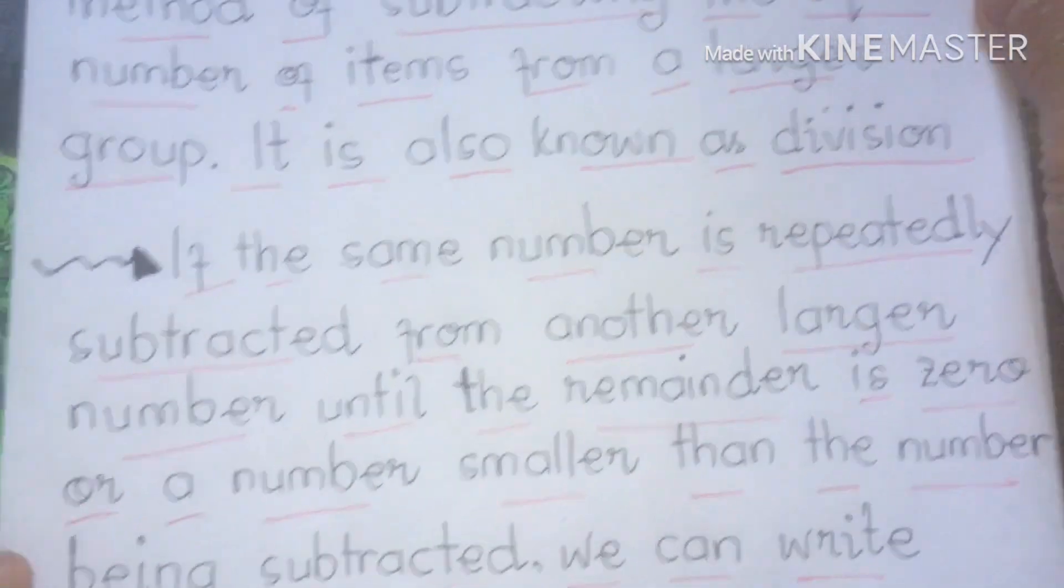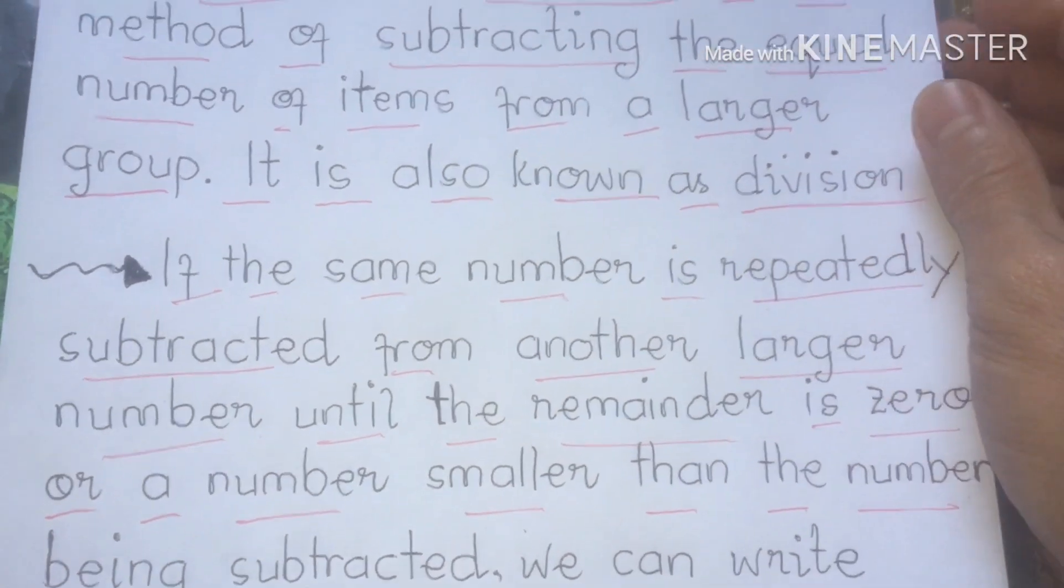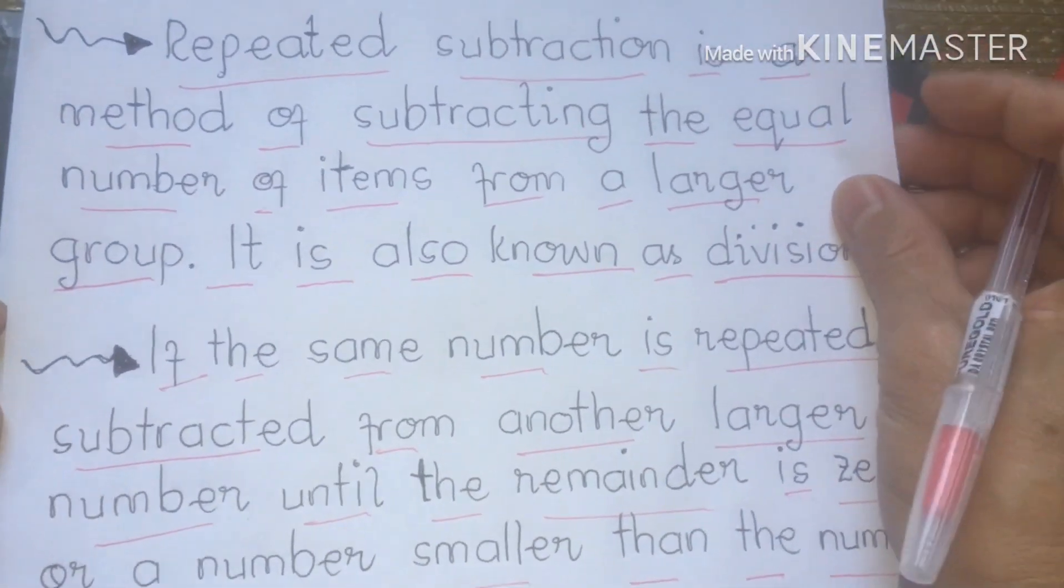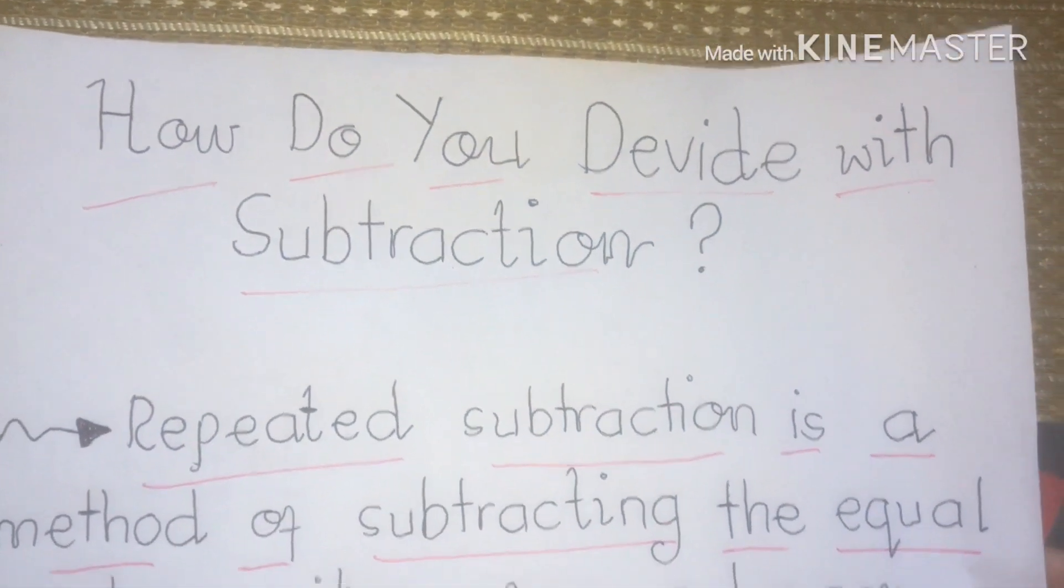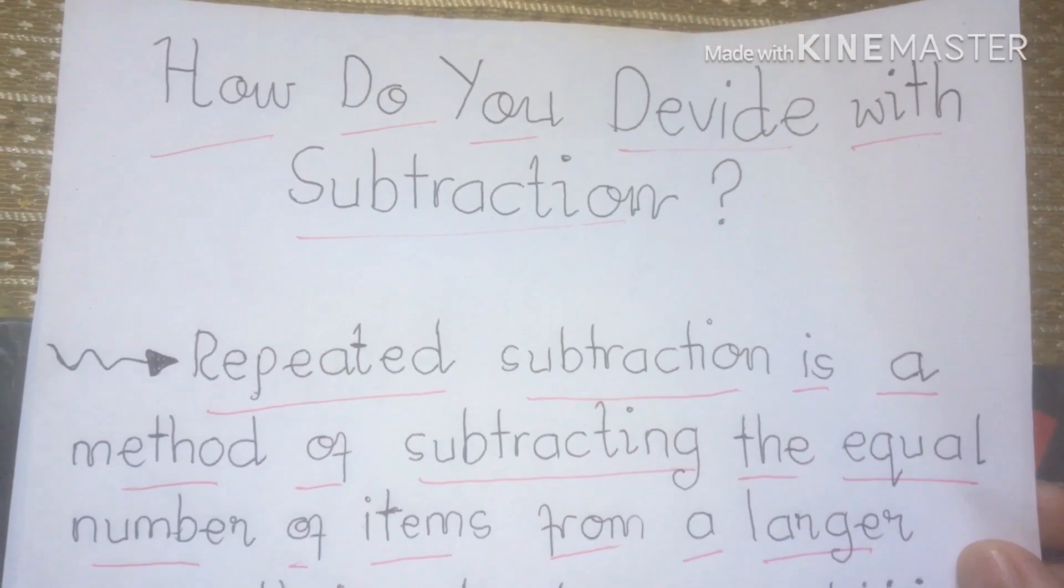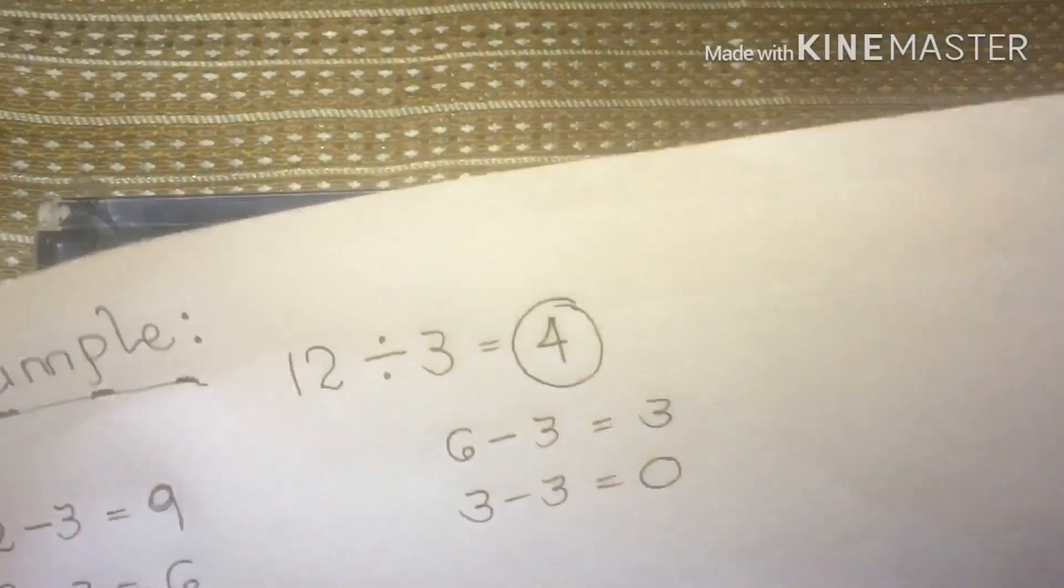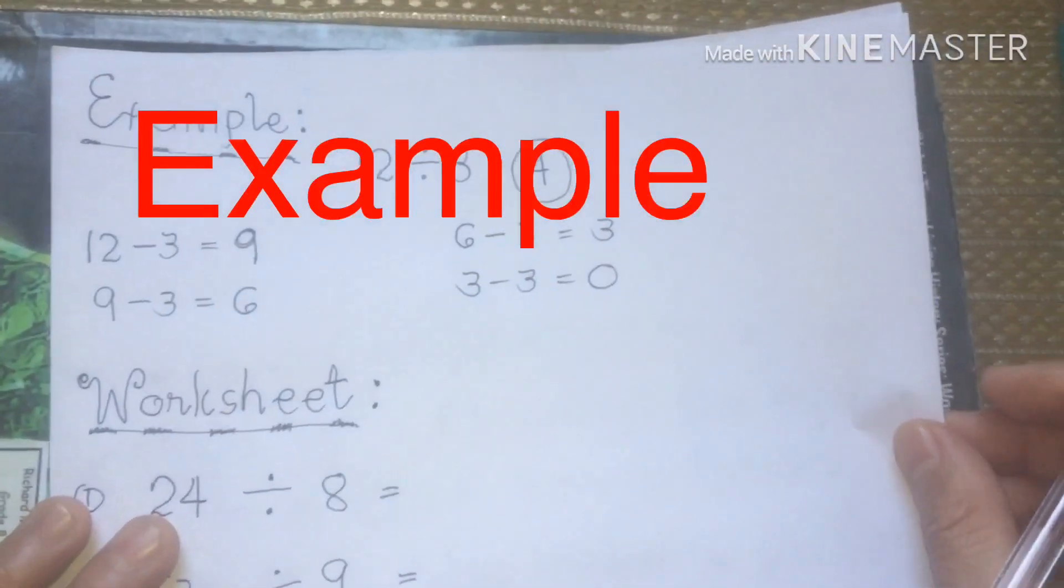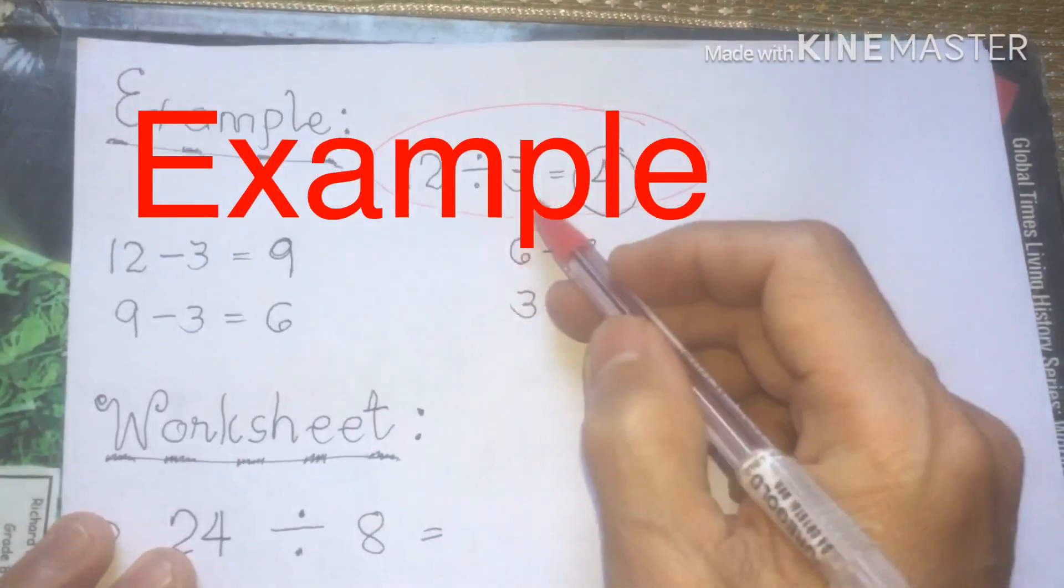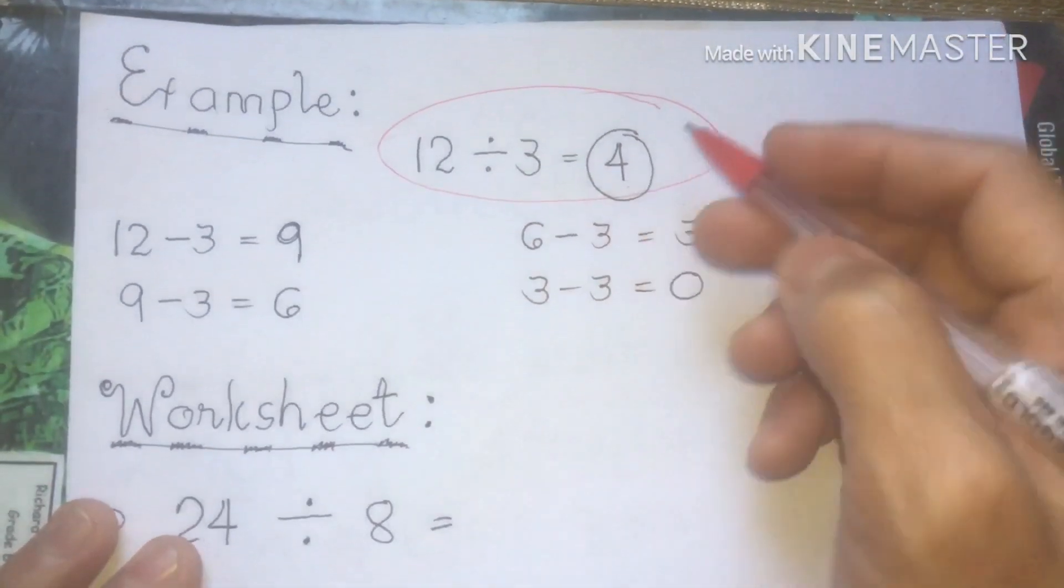My dear viewers, please watch so that you can follow our discussion today about division using subtraction method or techniques. We have our example class. I have here one example: 12 divided by 3 is equal to 4.